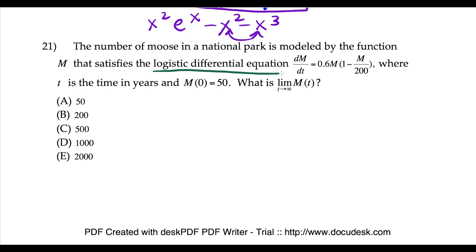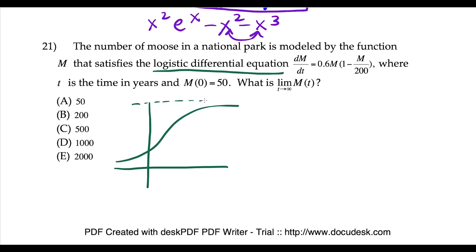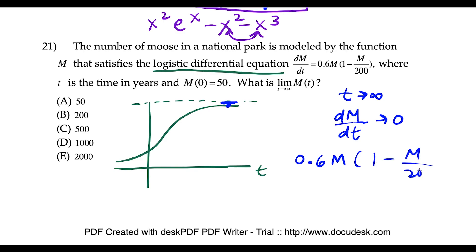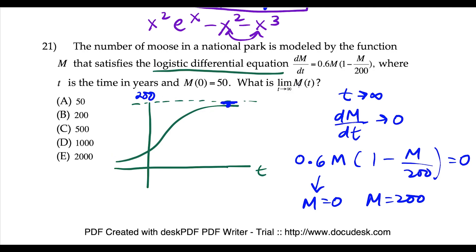Question 21: a logistic differential equation. The key is knowing that as t goes to infinity, dm/dt goes to zero. Setting 0.6m times (1 minus m/200) equal to zero: one factor gives m equals 0, the other gives m equals 200. So the upper horizontal asymptote — the carrying capacity — is 200. The limit as t goes to infinity of m(t) is 200 — choice B.